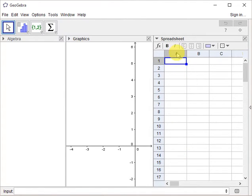And in the A column, you can add, for example, your x-coordinates. So here we could type minus 2, minus 1, 0, 1, 2, for example.